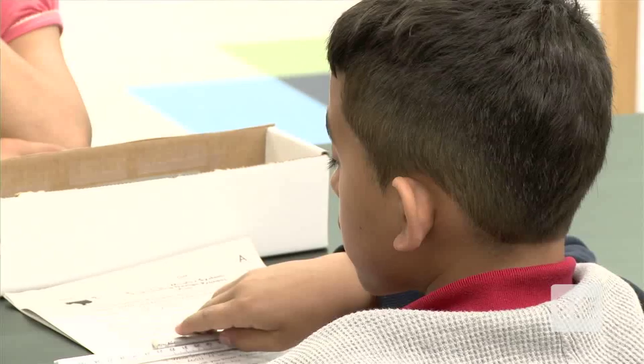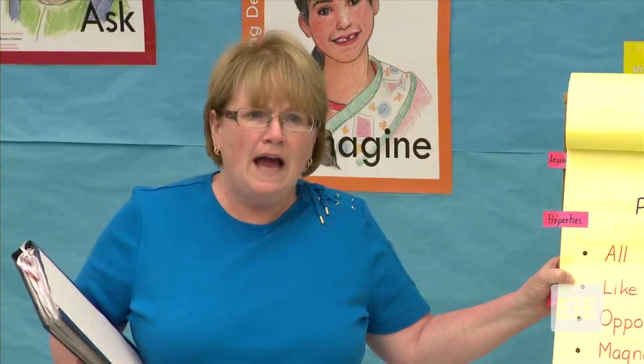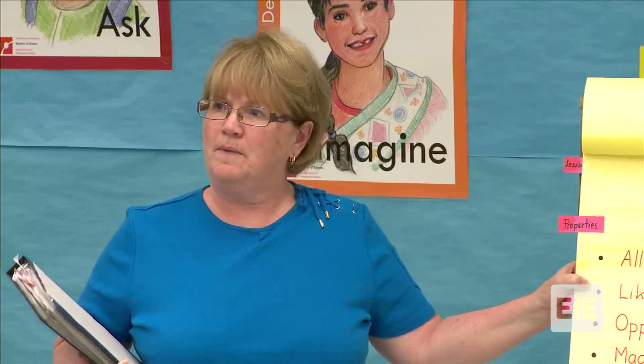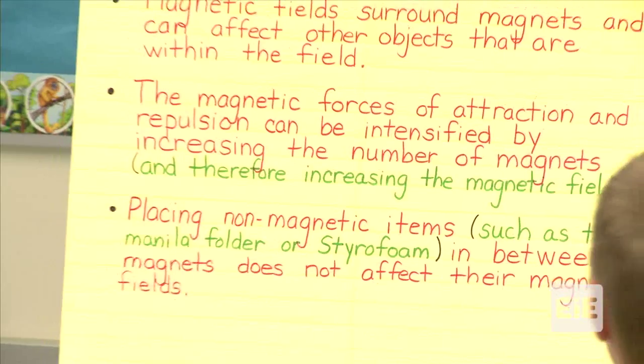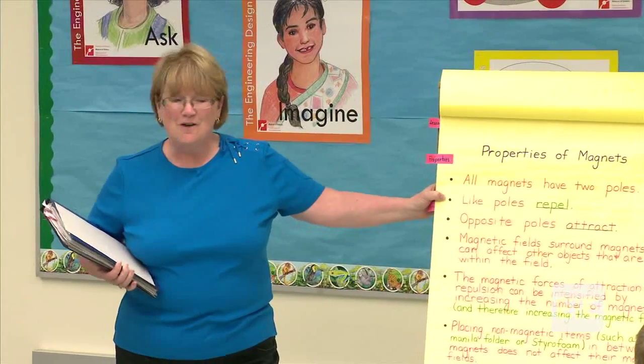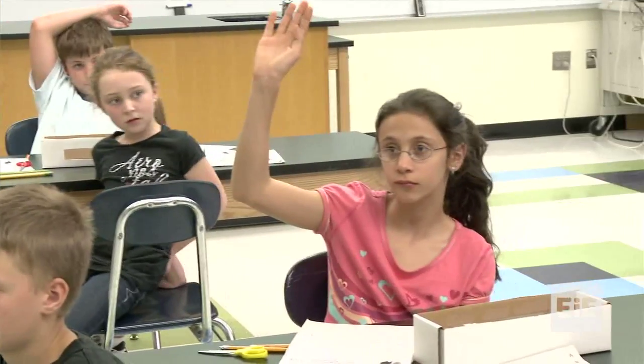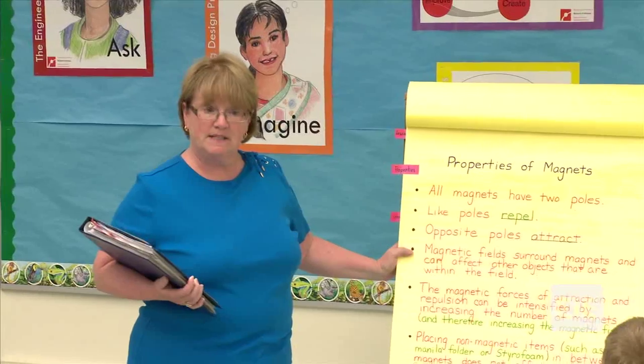Kevin: Like poles of magnets repel. Why do we want the magnets to repel when making this system? Thomas: So the maglev transportation system will levitate? Yes, it will levitate. What was the second property? Deborah: Magnets are only attracted to certain materials.